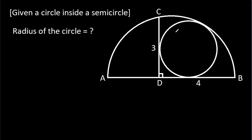In this video, we have been given a circle inside a semicircle where CD is 3 and BD is 4, and we have to find the radius of the circle.